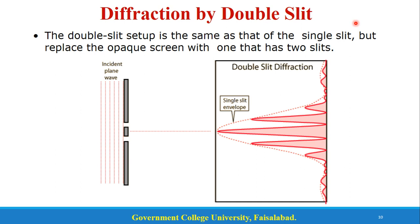Similarly, we have diffraction by double slit. The double slit setup is the same as single slit but replacing the back screen with one having two slits. Here you can see that the beams are separated and compressed in the pattern, and the single slit envelope modulates the double slit fringes. This is the comparison between single and double slit patterns.